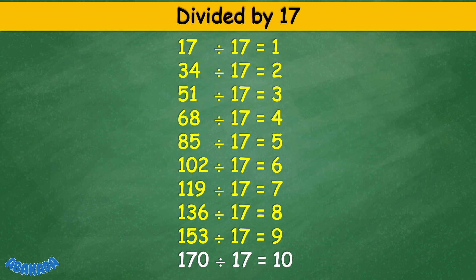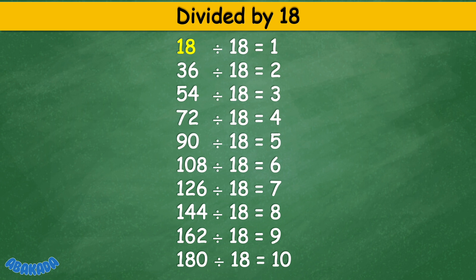Divided by 18. 18 divided by 18 equals 1. 36 divided by 18 equals 2. 54 divided by 18 equals 3. 72 divided by 18 equals 4. 90 divided by 18 equals 5. 108 divided by 18 equals 6. 126 divided by 18 equals 7. 144 divided by 18 equals 8. 162 divided by 18 equals 9. 180 divided by 18 equals 10.